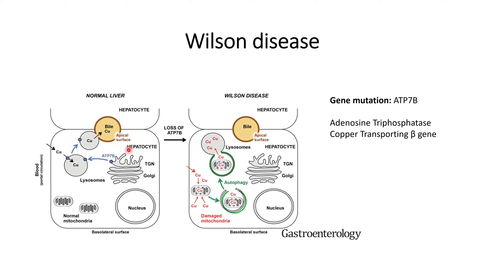In the case of Wilson disease, the ATP7B gene is mutated and is no longer functioning normally. Because of this, there is an increase in the amount of copper within the hepatocytes.